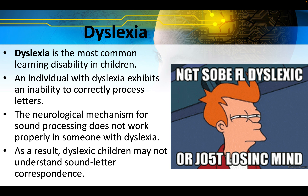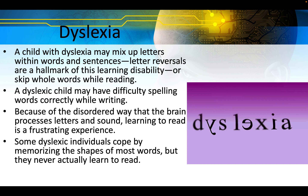Dyslexia is the most common learning disability in children. An individual with dyslexia exhibits an inability to correctly process letters — the neurological mechanism for sound processing does not work properly. As a result, dyslexic children may not understand sound-letter correspondence. A child with dyslexia may mix up letters within words and sentences, and letter reversals are a hallmark of this learning disability. A dyslexic child may have difficulty spelling words correctly, and because of the disordered way the brain processes letters and sound, learning to read is a frustrating experience. Some dyslexic individuals cope by memorizing the shapes of most words, but never actually learn to read.